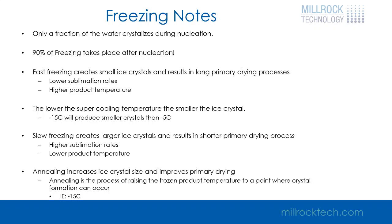The lower the super cooling temperature, the smaller the ice crystal. In production environments where there are very few nucleation sites, you can get super cooling down to minus 15 or minus 18 degrees. When that happens and crystallization forms, it's very quick and those ice crystals are very small. We try to see nucleation temperatures up around minus five degrees if possible with some control, as that gives us a larger starting ice crystal structure and better ice formation for the primary drying process.